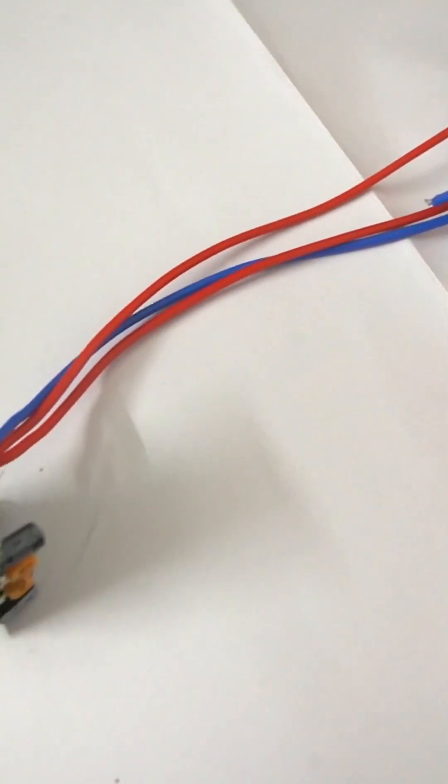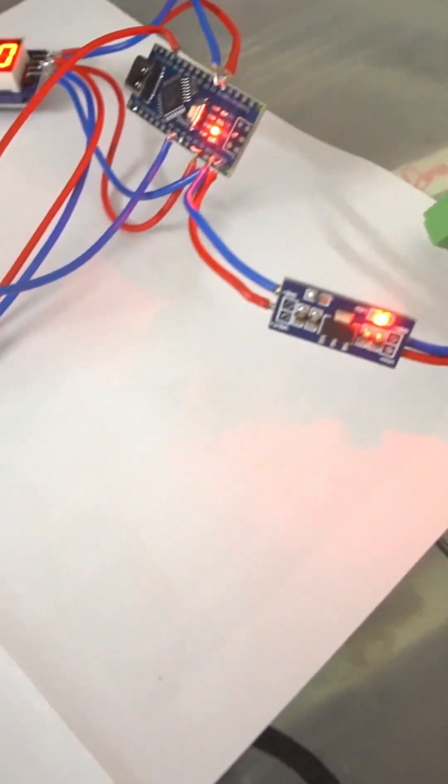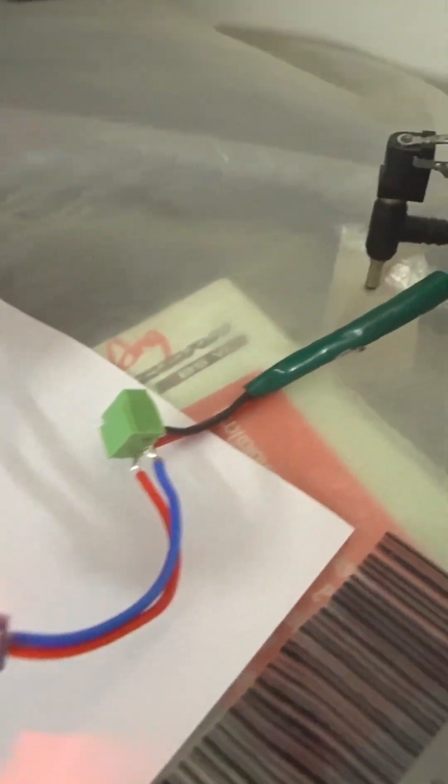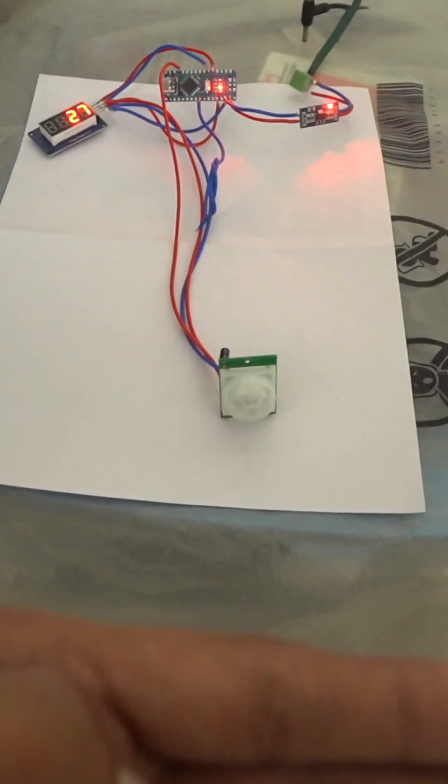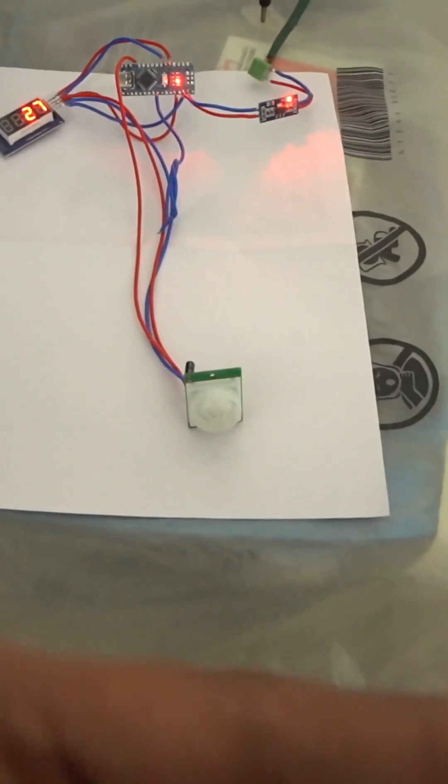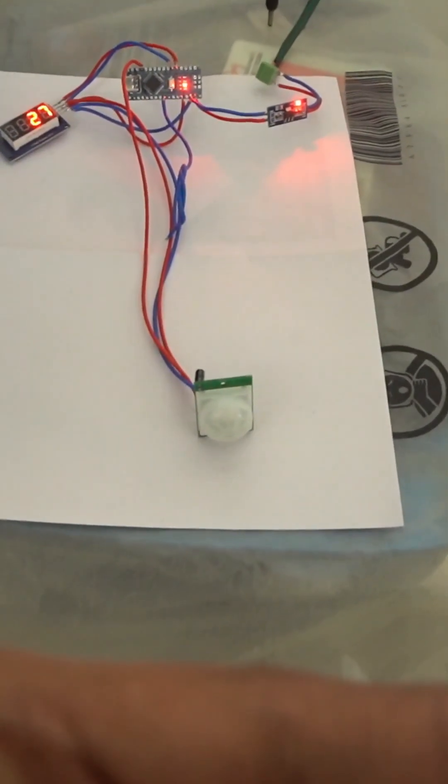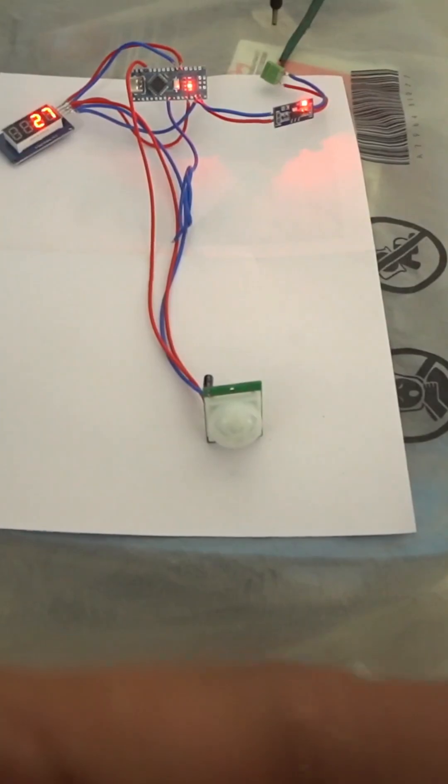This is the voltage regulator. I am supplying 9 volt DC and this regulator will convert the 9 volt DC to 5 volt DC. I'm demonstrating it by waving my hands in front of this motion sensor.